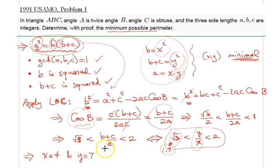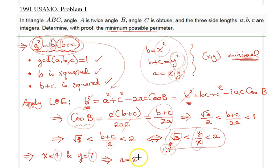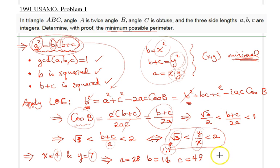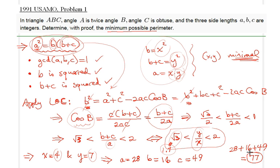Plugging in x equals 4 and y equals 7: A equals x times y equals 28, B equals x squared equals 16, and C equals y squared minus B equals 49 minus 16 equals 33... actually C equals y squared equals 49. The minimum possible perimeter is 28 plus 16 plus 49 equals 77. That is the minimal perimeter and that solves our problem.